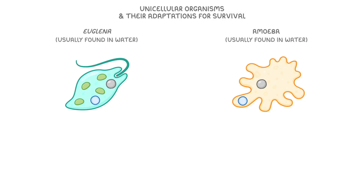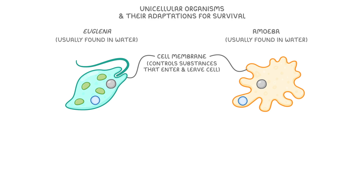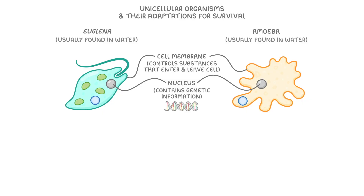Firstly, both organisms are surrounded by a cell membrane, which controls which substances can enter and leave the cell. Both cells also have a nucleus that contains their genetic information and controls the cellular activities. However, it's important to note that not all unicellular organisms have a nucleus — for instance, bacteria don't have one.